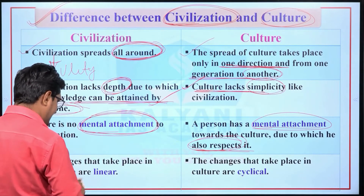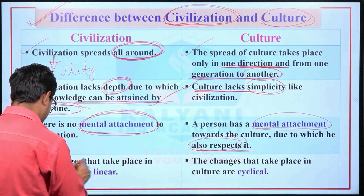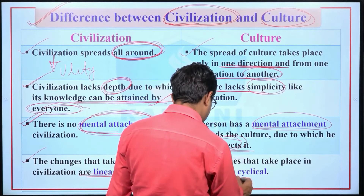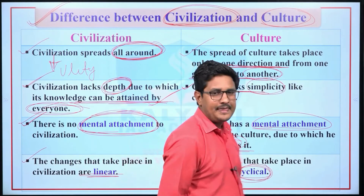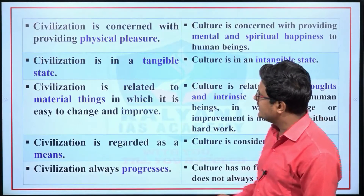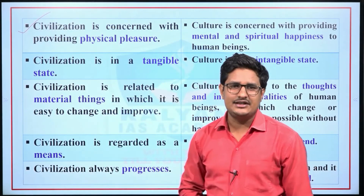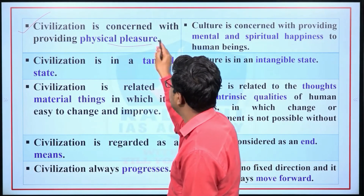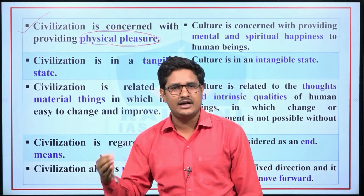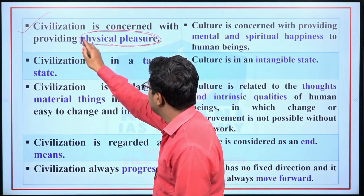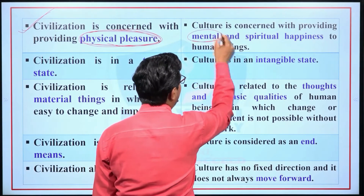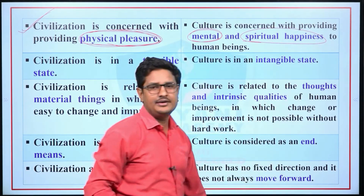Fourth difference: the changes that take place in civilization are linear, whereas the changes that take place in culture are cyclic. Fifth difference: civilization is concerned with providing physical pleasure — since it has the utility factor and involves material aspects — whereas culture is concerned with providing mental and spiritual happiness to human beings.